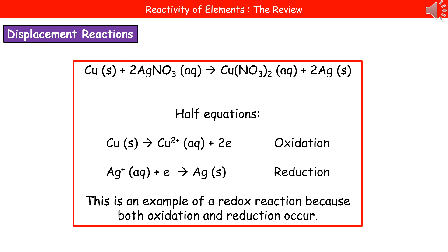We also need to write the half equations showing oxidation and reduction. For oxidation: copper is changed into Cu2+ ions and two electrons. For reduction: the silver ion Ag+ gains an electron to form silver atoms. Because both reduction and oxidation are occurring, this is another example of a redox reaction.